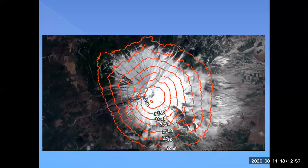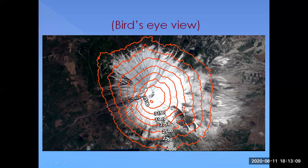Now what if instead of this perspective I look at the mountain from the top — a bird's eye view? If I cut the mountain at 2000 meters, the outermost red line is what I get, and that entire portion becomes a flat-topped plateau. Similarly, cutting at 2250 meters gives a smaller plateau, and as I increase the height of the cut, the top area decreases in size.